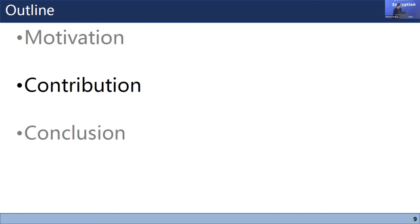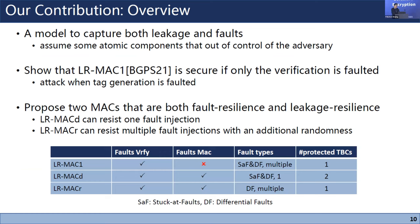Our contributions: we first propose a model capturing both leakage and faults, with some atomic components assumed out of adversary control — without this assumption there is no security at all. Using this model we show that LR-MAC-1 is insecure if only verification is protected. We also propose two new MAC algorithms: LR-MAC-D, which iterates LR-MAC-1 twice and can resist more than one fault, and LR-MAC-R, which uses additional randomness.